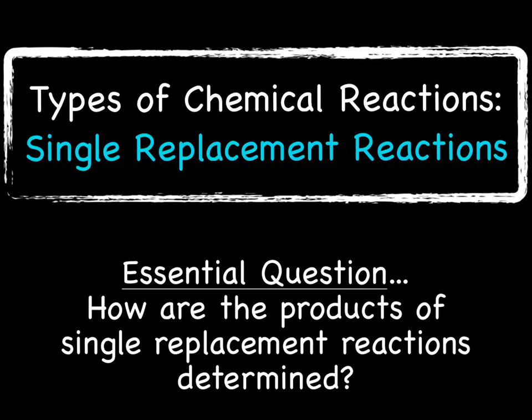Today's essential question: how are the products of single replacement reactions determined? You're going to need your periodic tables and polyatomic ion handouts handy.